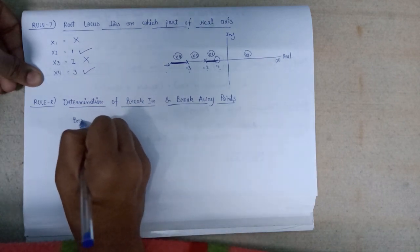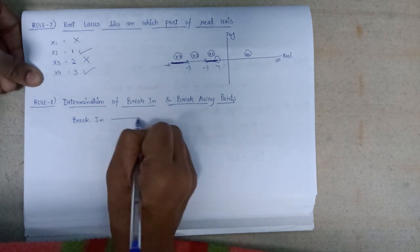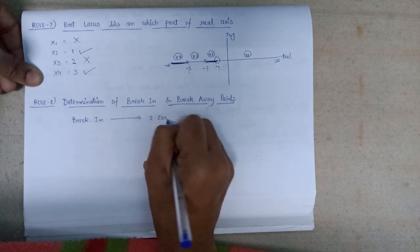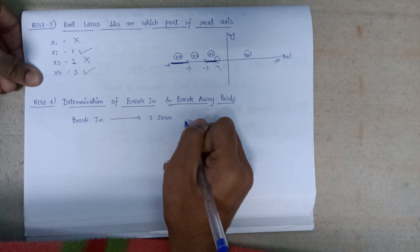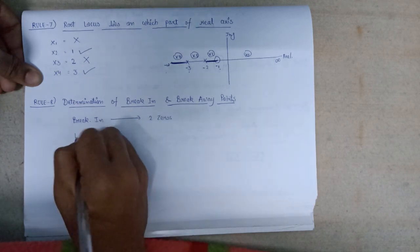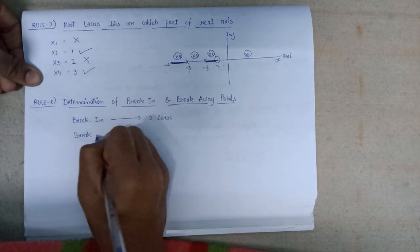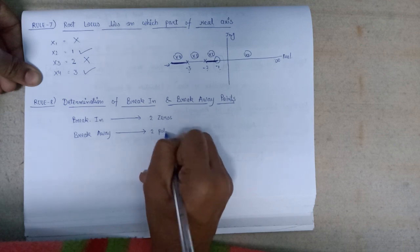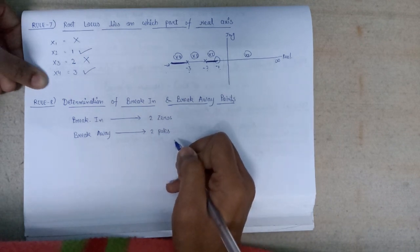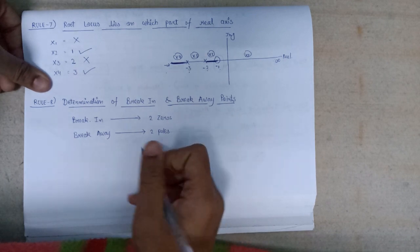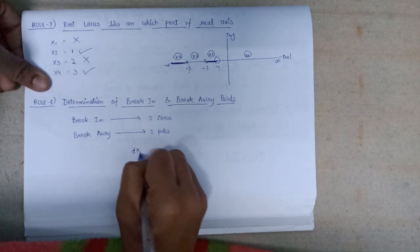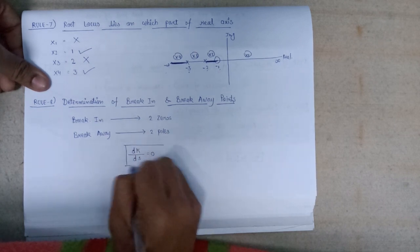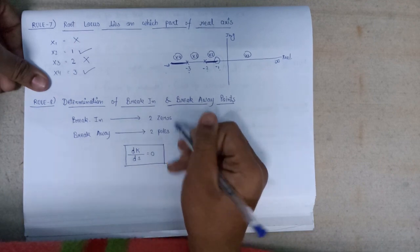The next step is determination of break-in and break-away points. The break-in point concept is applicable when two conjugate zeros lie on the real axis of the s-plane, and the break-away point concept is applicable when two conjugate poles lie on the s-plane. Both can be calculated using the formula dk/ds = 0.